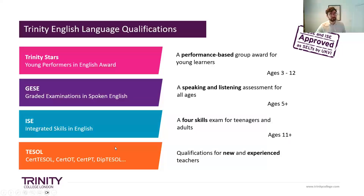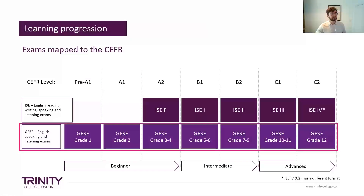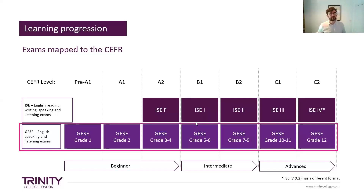Let's have a look at the different levels in terms of GESE. As you may know, there are 12 grades in GESE. Grades one, two, and three go right up to A2, in the pre-intermediate phase. Moving into intermediate, you have grades 5, 6, 7, 8, and 9 in the lower and upper intermediate phase. And then you have the advanced grades, which is from grade 10, 11, and 12.